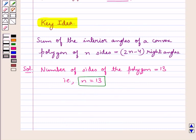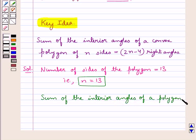Now, from the key idea, we have that the sum of the interior angles of a convex polygon of n sides is equal to 2n minus 4 right angles. Thus, we can say sum of the interior angles of a polygon of 13 sides is equal to 2 into 13, that is, in place of n, we put 13 minus 4 right angles.